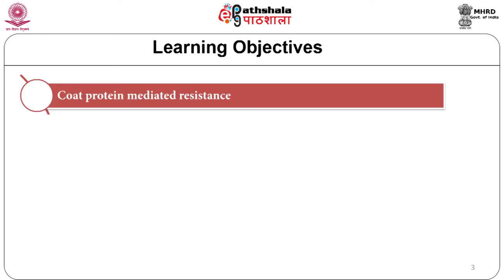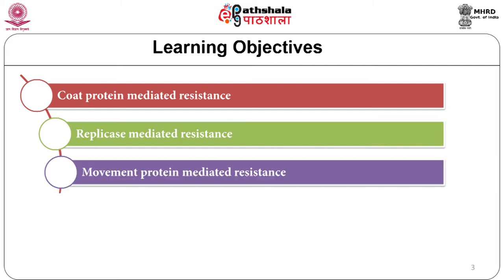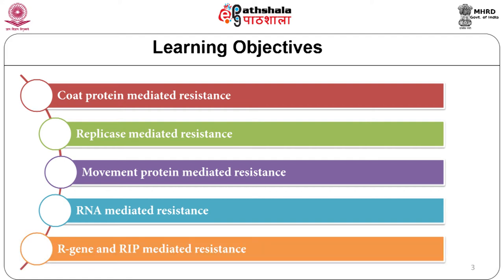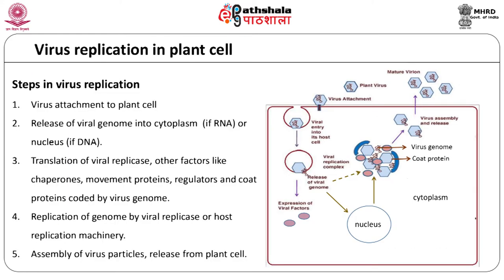These include coat protein mediated resistance, replicase mediated resistance, movement protein mediated resistance, RNA mediated resistance, as well as the use of plant defense genes for inducing virus resistance, namely the R genes or ribosomal inactivating protein coding genes. Viruses typically enter plant cells through cellular damage. Virus encoded proteins such as replicase, capsid protein, and movement protein are translated within the host cell cytosol and cooperatively function in translation, replication, encapsulation, and movement of the virus. The replication of the viral genome may occur in the nucleus (DNA) or in the cytoplasm (RNA) by virus RNA-dependent RNA polymerase. Viral disease is caused due to the use of building blocks and energy from plant cells by the virus for its own replication.